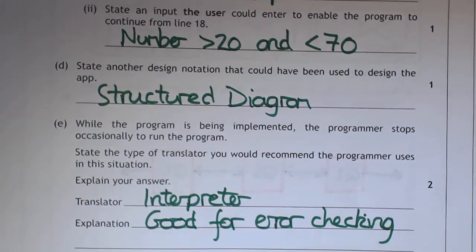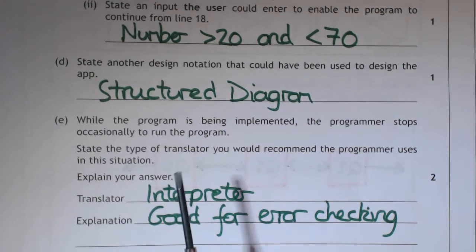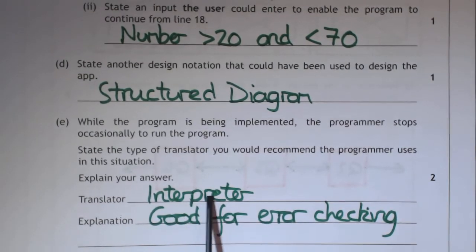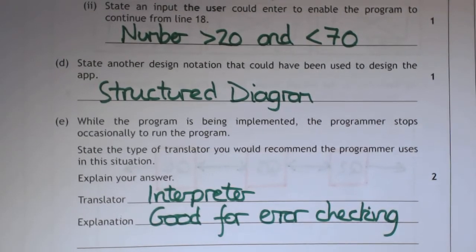If you're wanting a program and you're still developing it, we use a translator that's called an interpreter. Because all it does is it takes a line of your programming language, translates it into machine code and runs it. If it runs successfully, it goes to the next line. If it doesn't, it then flags up that there's an error, so it's good for error checking and then you can go and fix it.